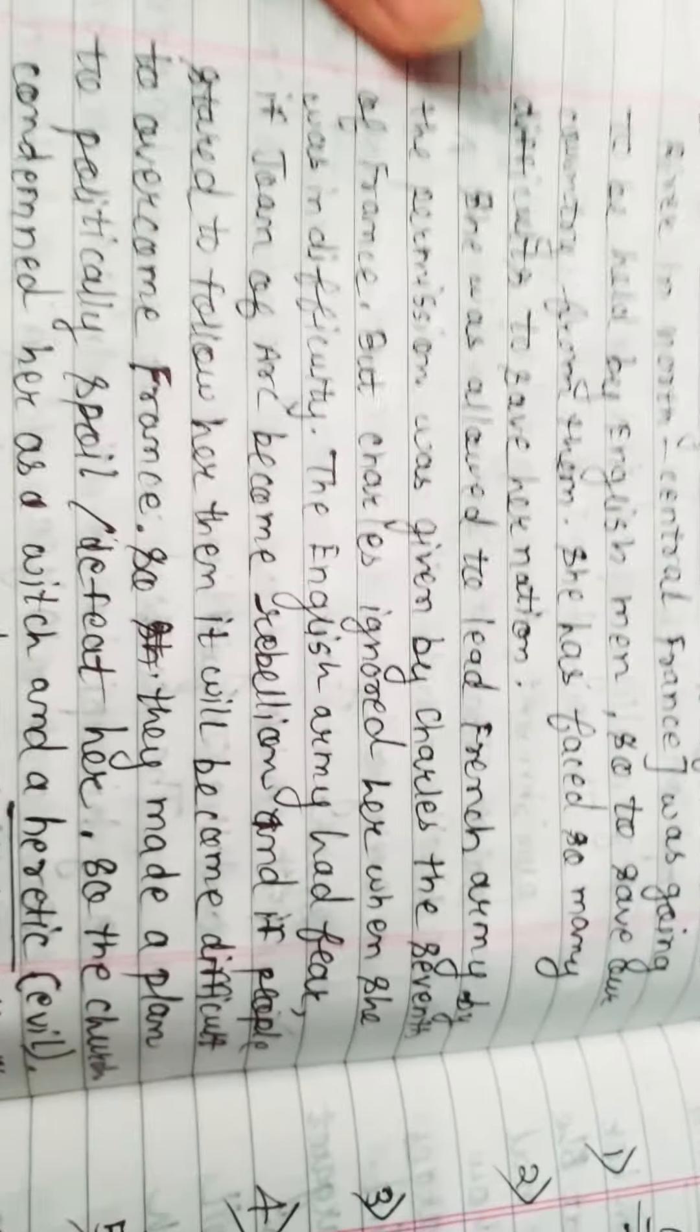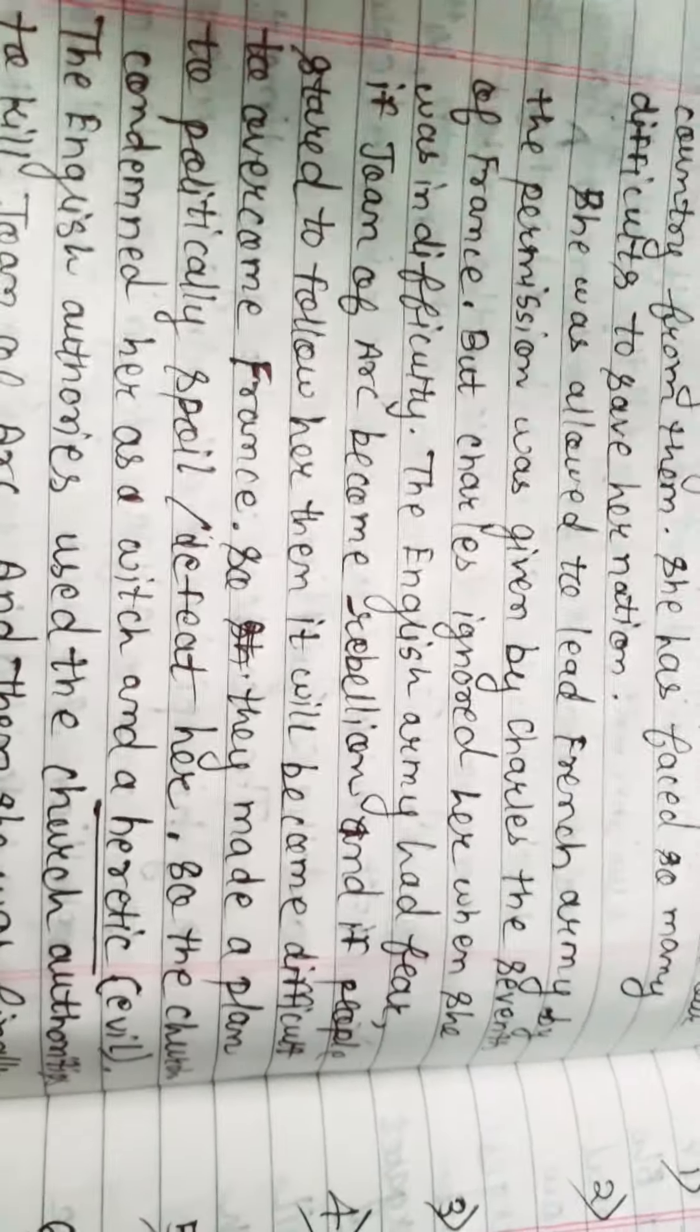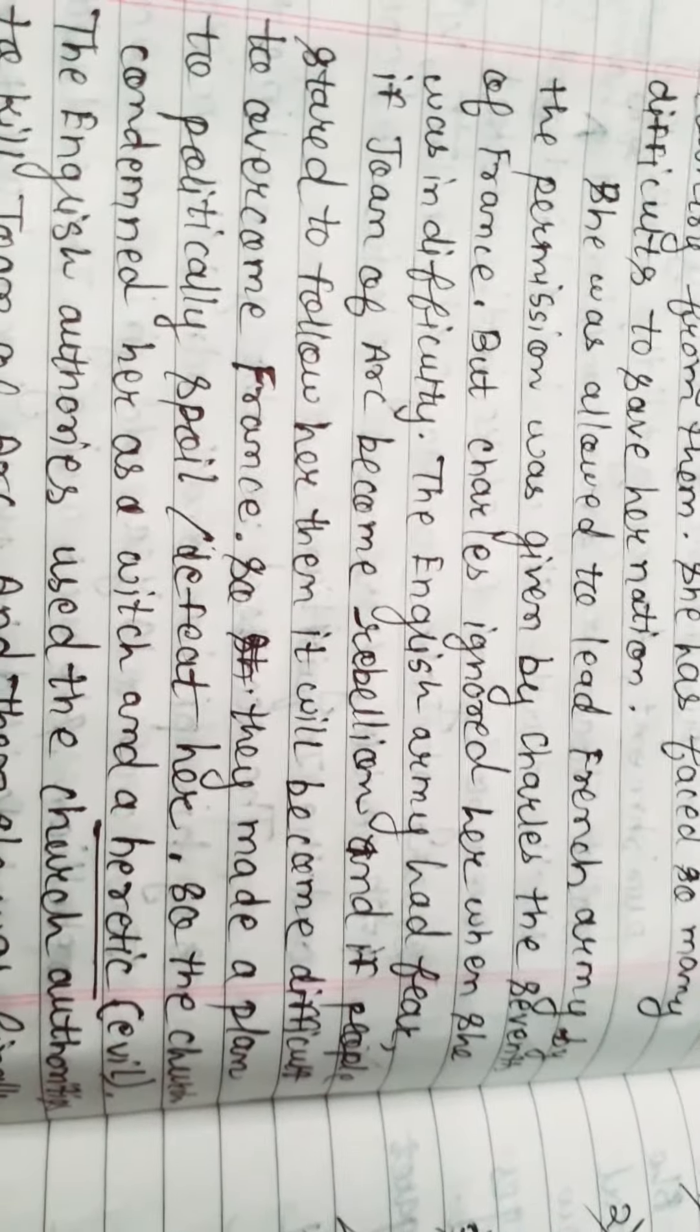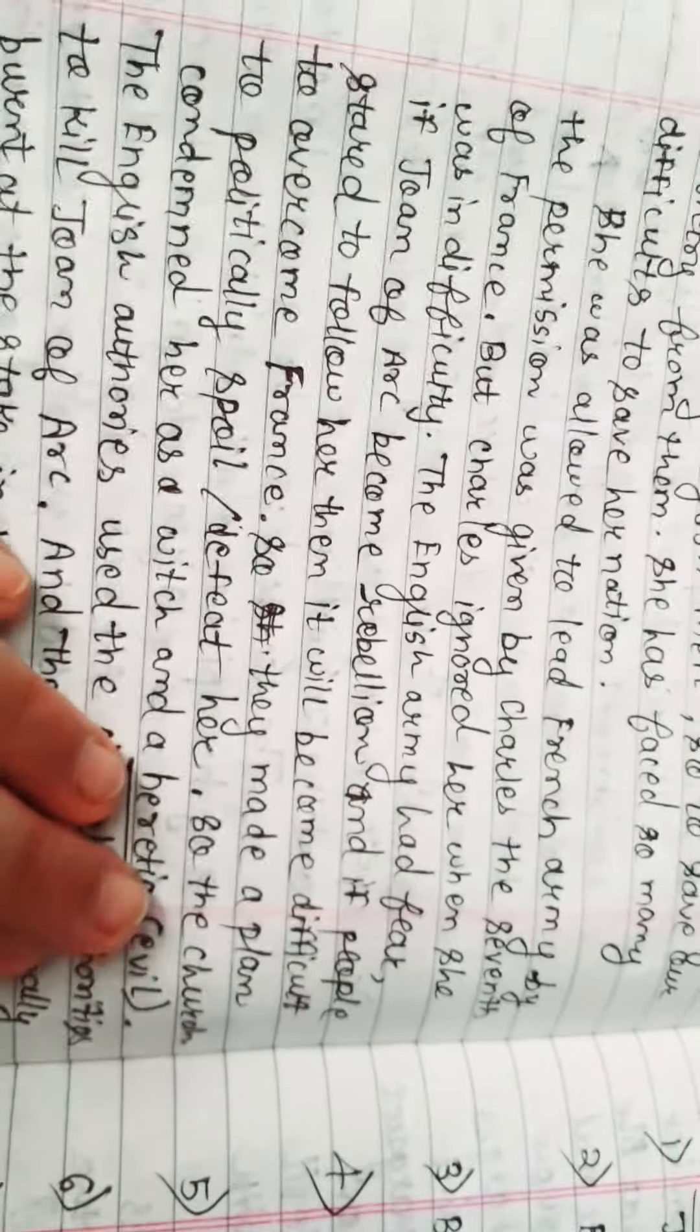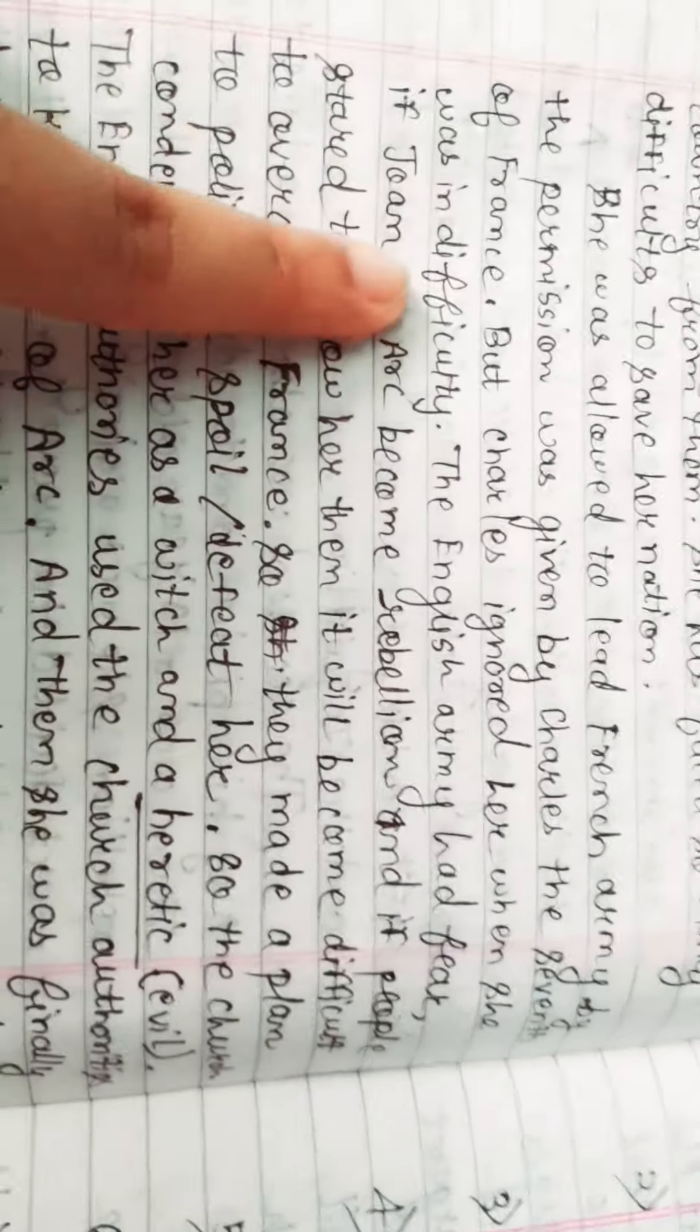She was allowed to lead French army by permission given by Charles VII of France. She was given the permission by the king to lead the army. But when Joan was facing difficulties, Charles ignored her when she was in difficulty.